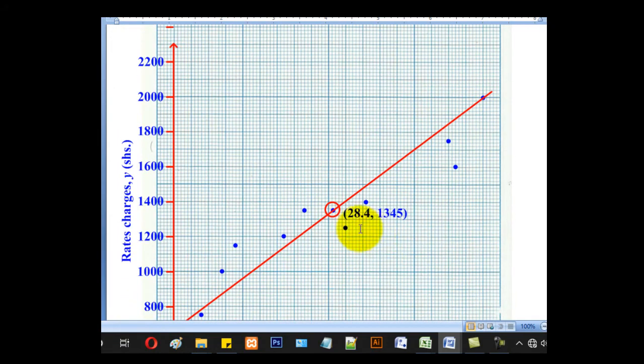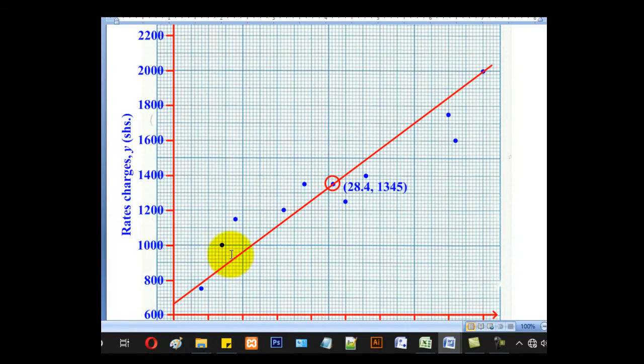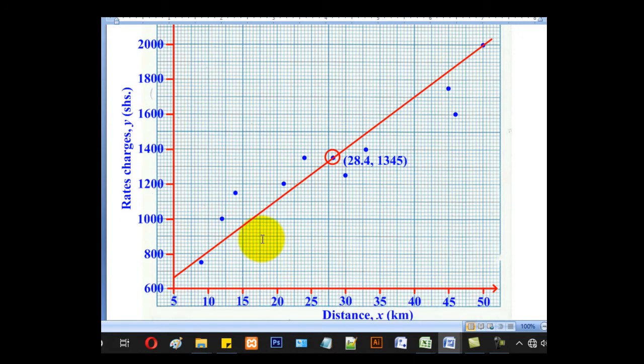So in this case, if this line passes through the mean point and this point, it will leave 1, 2, 3, 4 points on this side and 1, 2, 3, 4, 5 points on this side. So 4 points this side, 5 points this side. So they are almost equal. The difference is 1. Meaning that our line is the required line of best fit.